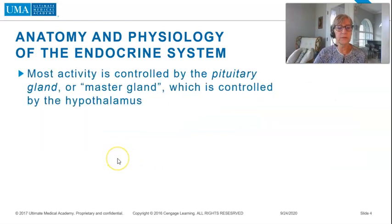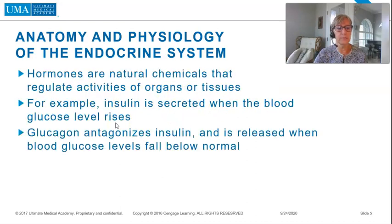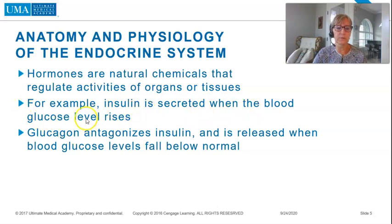Most activity is controlled by the pituitary gland, or master gland, which is controlled by the hypothalamus. Hormones are natural chemicals that regulate activities of organs or tissues. For example, insulin is secreted when the blood glucose level rises. Glucagon antagonizes insulin and is released when blood glucose levels fall below normal.